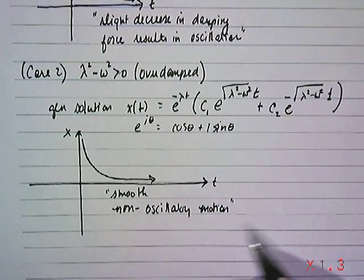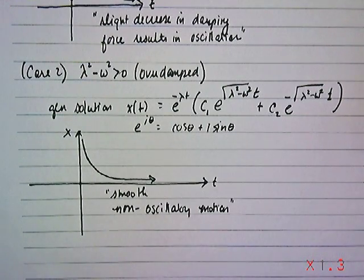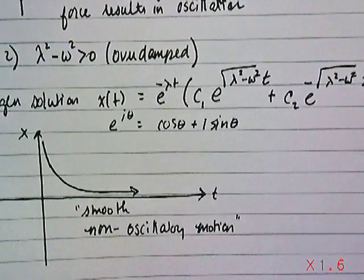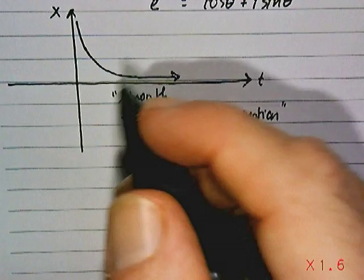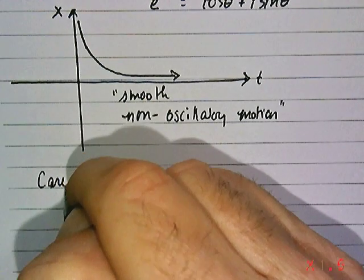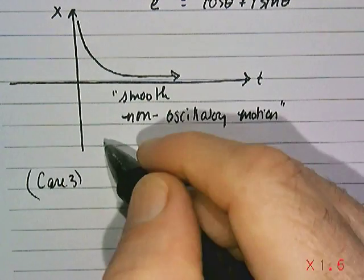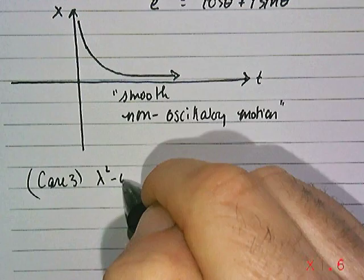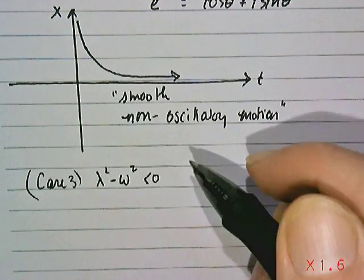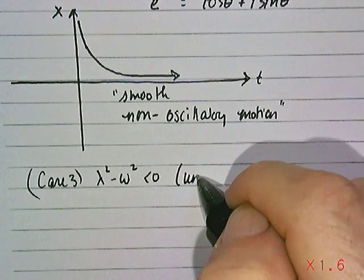And then finally, the last case we want to consider. Let's look at case three. You can imagine the third case has to be when what's under the radical is negative. This is called underdamped.